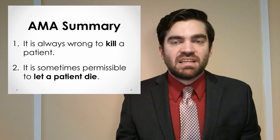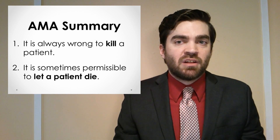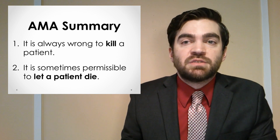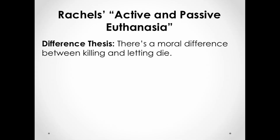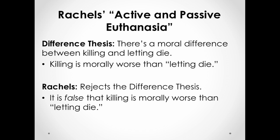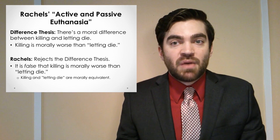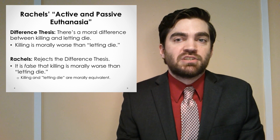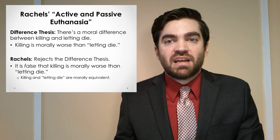To sum that up, what the AMA is saying is direct killing is always wrong, but passive euthanasia — allowing a patient to die — is sometimes okay. Throughout this video, I'm going to refer to this as the difference thesis. The difference thesis says there's a moral difference between killing and letting die. People who defend the difference thesis tend to think that killing is morally wrong or more wrong than letting people die. Rachels, though, is going to argue that the difference thesis is false — he thinks the AMA is mistaken when they say that direct killing of a patient by a physician is always wrong, whereas letting a patient die is sometimes okay.